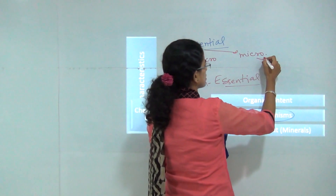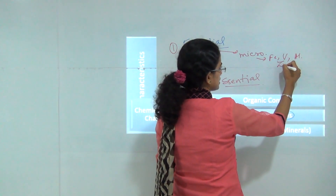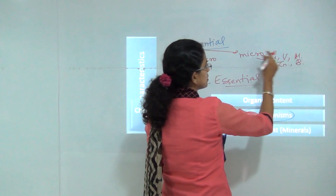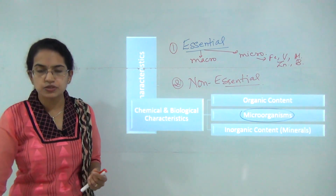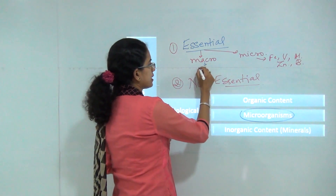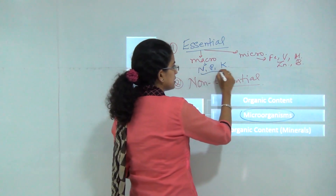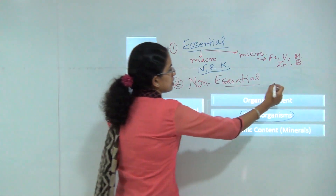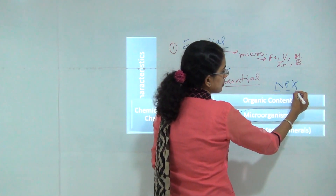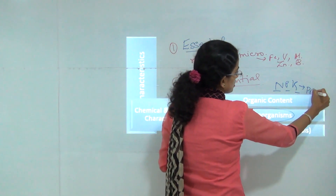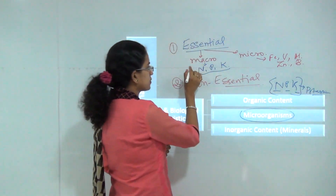Micronutrients include iron, vanadium, aluminium, traces of zinc, and boron. Macronutrients, required in large quantity, include sodium, potassium, and phosphorus — the basic NPK fertilizer we use. N stands for nitrogen, P for phosphorus, and K for potassium, based on names derived from the periodic table. These are the macronutrients.